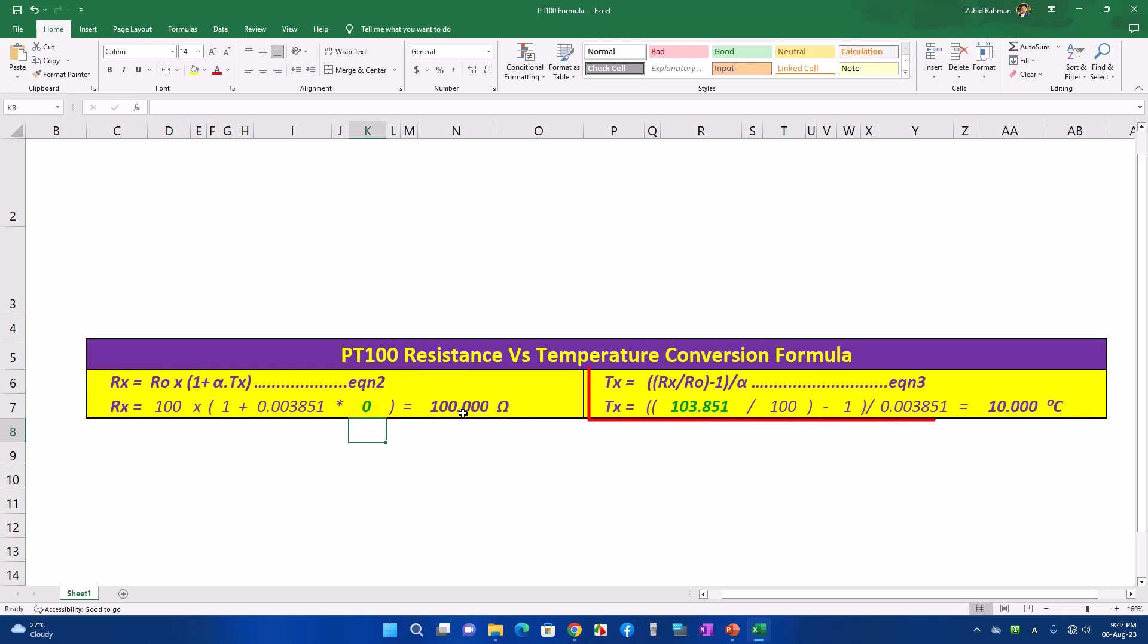Now we will see the temperature for any given resistance value of the PT100 sensor. If you want, you can write anything here. Give the value of resistance 100 ohms, then the result is 0 degree centigrade. That is, the value of resistance for 0 degree centigrade is 100 ohms. If we turn it to 111, the temperature is 28.564 degree Celsius. If you want, you can check this value from PT100 temperature chart.